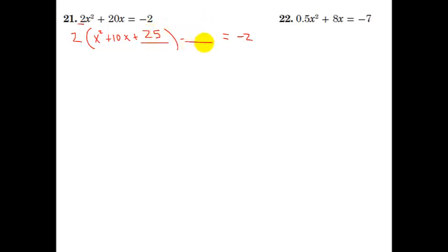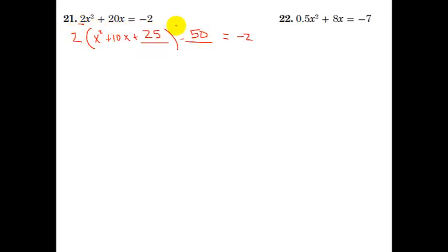Normally you'd just put minus 25 to balance it out, but because this 25 is inside parentheses that are being doubled, the 2 is actually being distributed and multiplied by the 25. So 2 times 25 is 50 — even though I wrote 25 inside, the quantity I've adjusted the equation by is plus 50. So to balance it out, outside the parentheses I need to subtract 50.